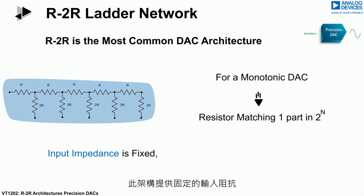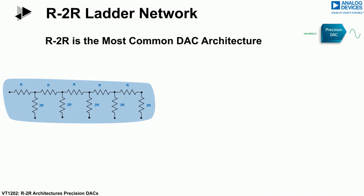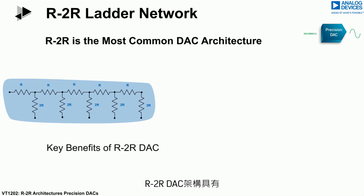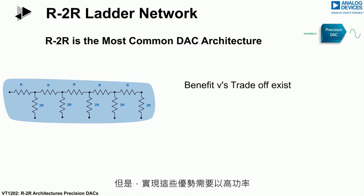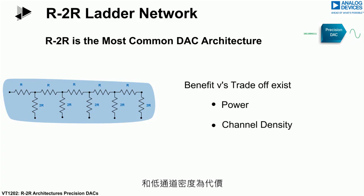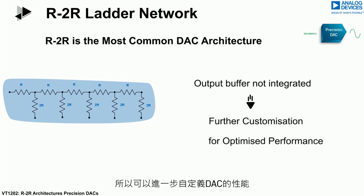To yield a monotonic DAC, the resistors need to match one part in 2^N. This architecture offers fixed input impedance; however, the output impedance is code dependent. The benefits associated with an R2R DAC include low noise, small dynamic transients, and fast slew rates. However, these benefits come at the expense of high power and low channel density. Also, R2R DACs do not integrate an output buffer, which offers further customization of the DAC's performance.